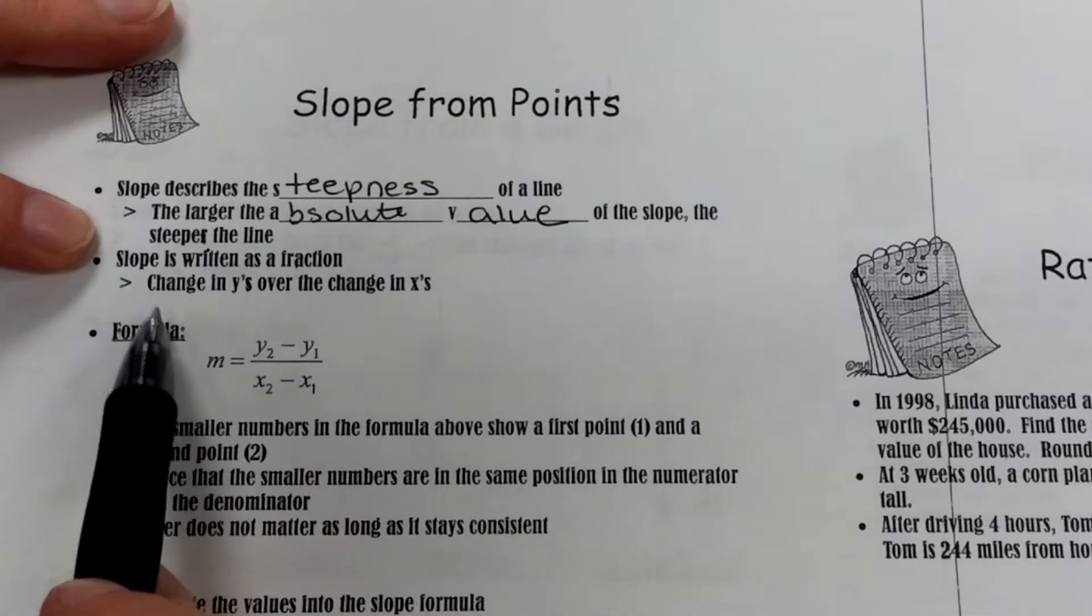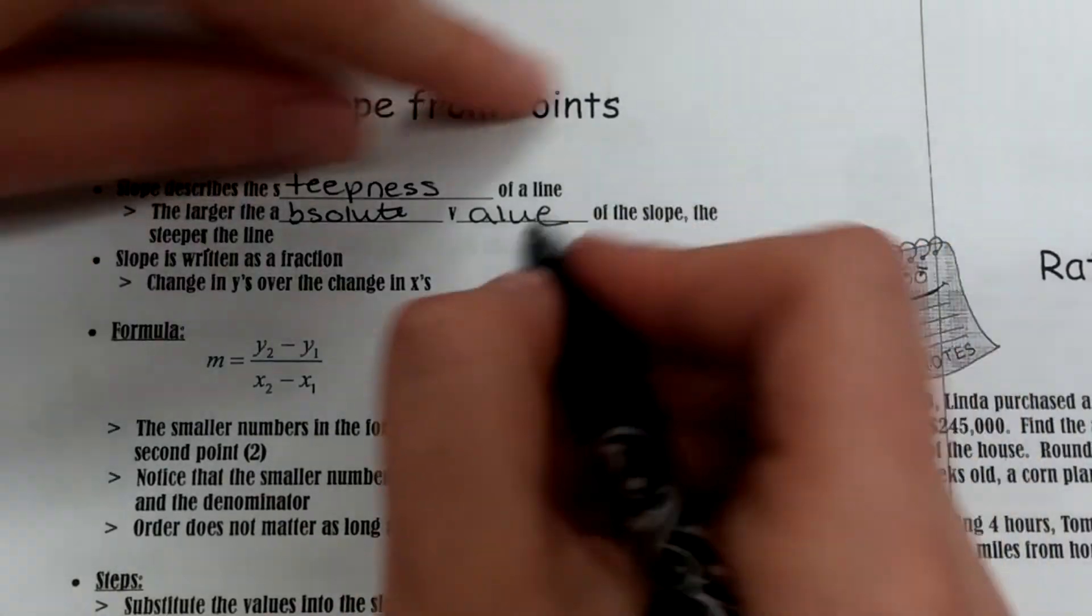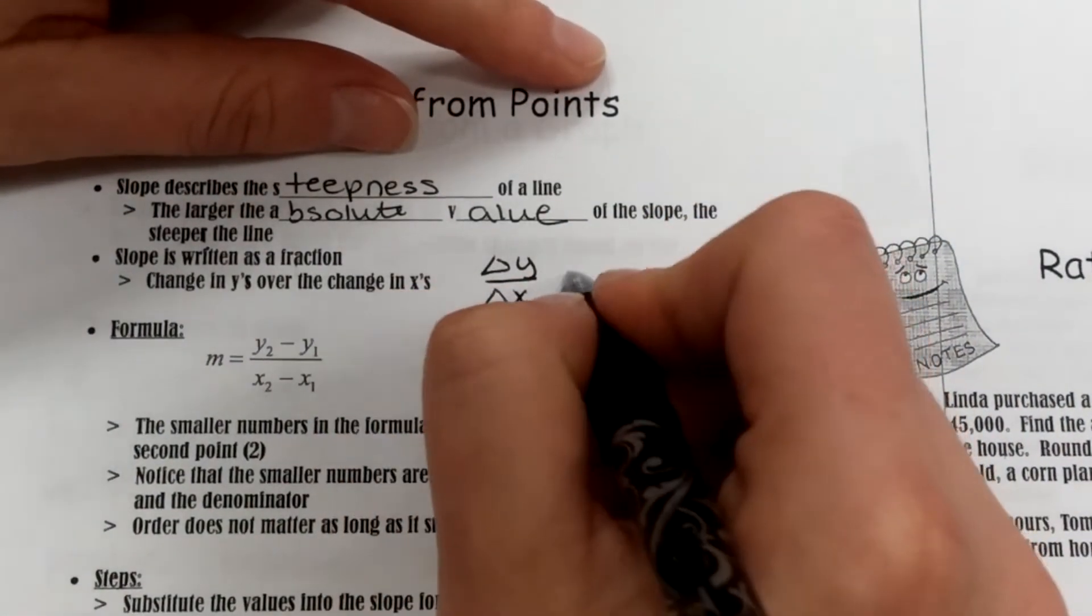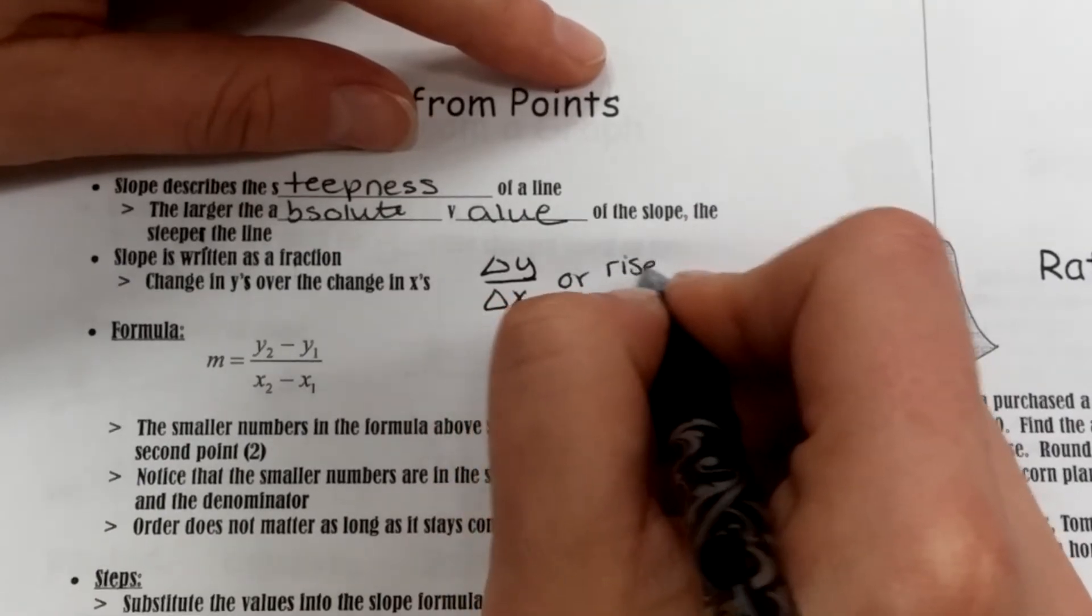Slope is written as a fraction—it's the change in y's over the change in x's. We last time wrote that as delta y over delta x, or rise over run.